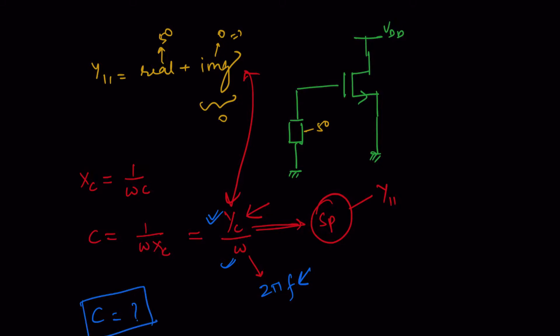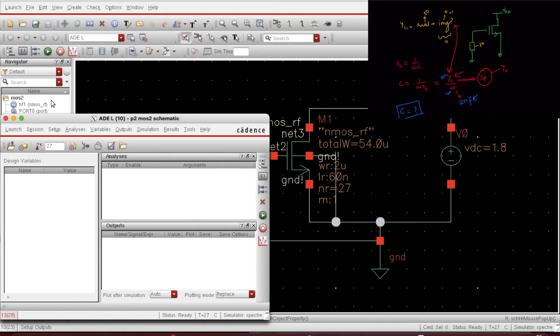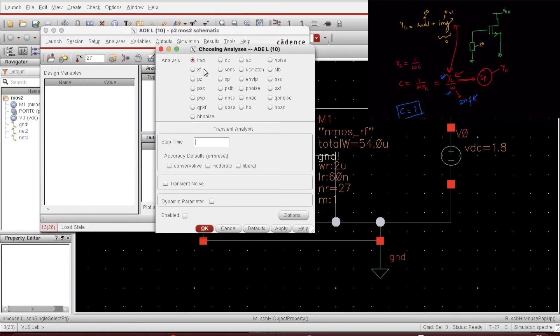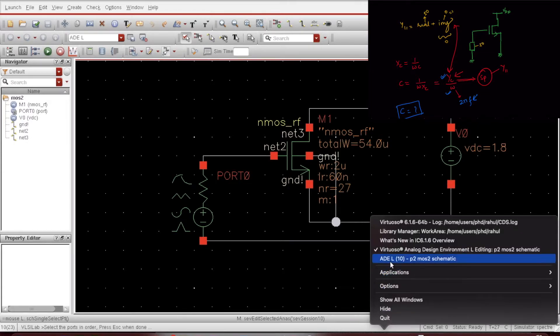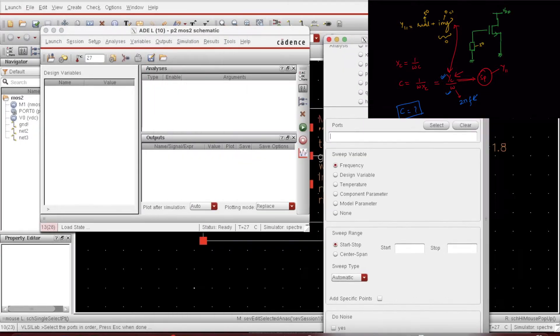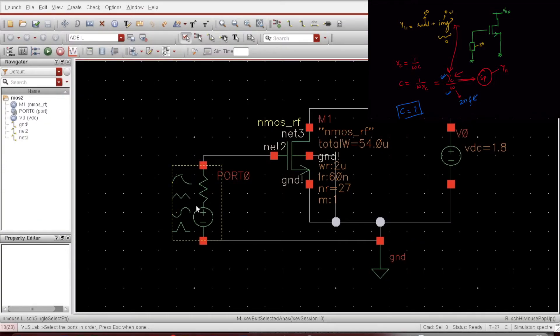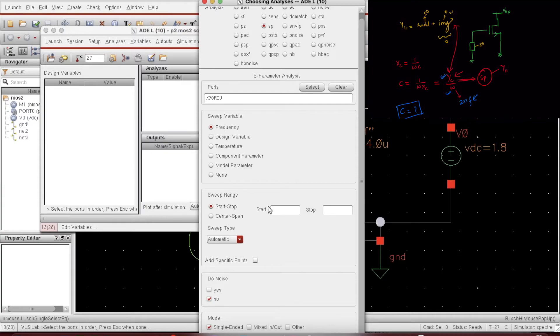So I will show you on the tool. I go to the ADL window and from here I will select my analysis, that is SP. I need to select the port. Once these two rings appear, that means it got selected. Now it is selected. And the range.